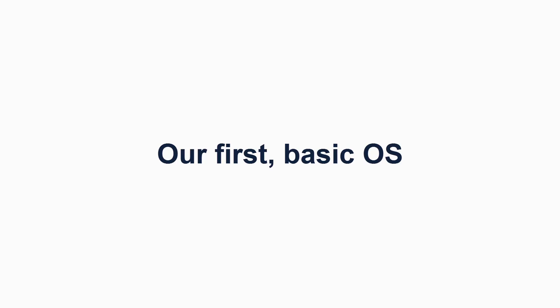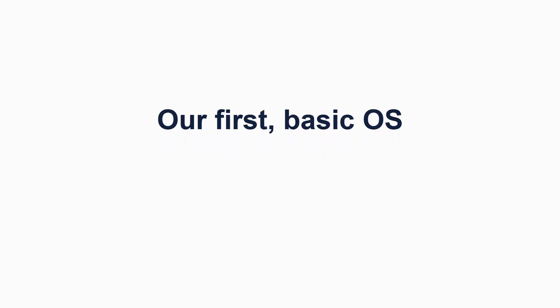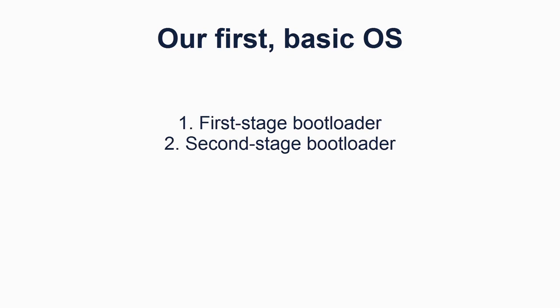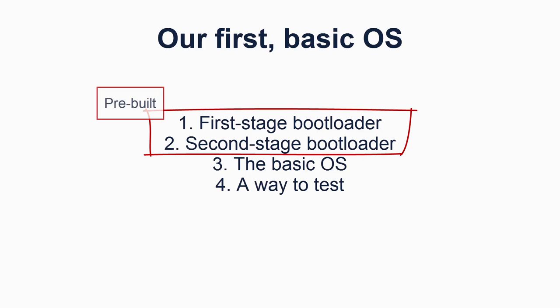At this point we will start looking at how we create our first basic bootable operating system. We know we are going to need four things: a first stage bootloader, a second stage bootloader, the basic operating system itself, and a way to test all of it. Items 1 and 2 are pre-built for us. You can write your own bootloader and there are examples online, but given how well established, capable, and stable existing open source options are, it's relatively boring and pointless. The pre-built first and second stage bootloaders we will use are part of the SysLinux project.